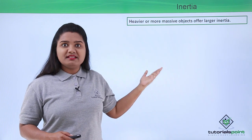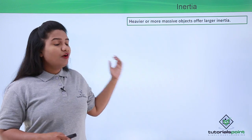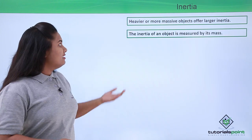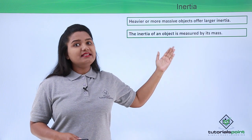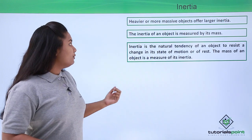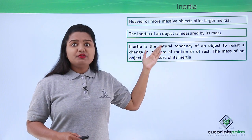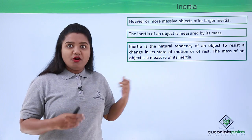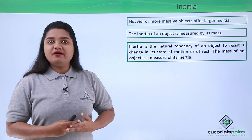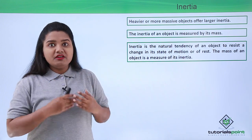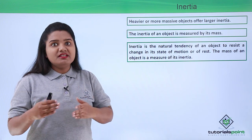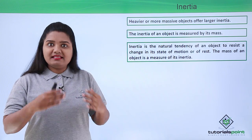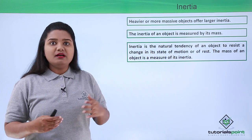From all these examples we conclude that heavier or more massive objects have more inertia — they offer larger inertia compared to lighter objects. The inertia of an object is measured by its mass. Inertia is the natural tendency of an object to resist any change in its state of rest or motion, and mass is the measure of that inertia — the heavier the object, the greater the inertia it offers.